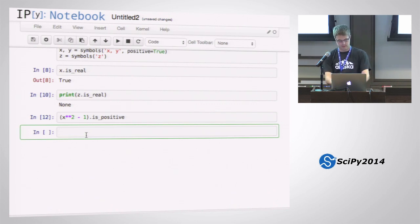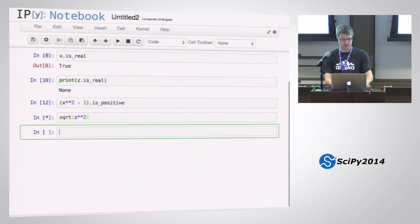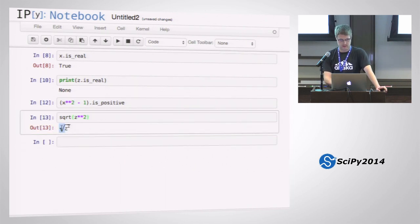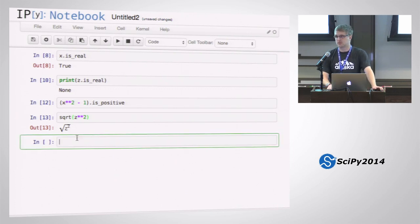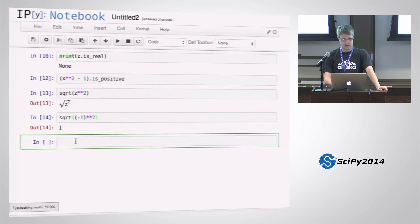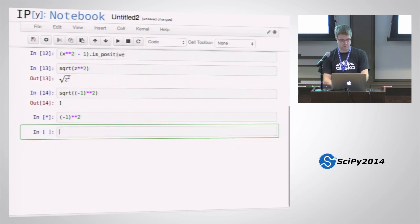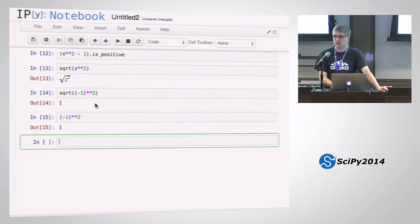And so this is useful because, for example, if you take like the square root of something squared, this doesn't simplify to just z. And the reason is that, in general, the square root of x squared does not equal x. For example, if x equals negative 1, so if I take negative 1 squared and I take the square root of that, this is just 1. That's because the negative 1 squared is 1, and the square root of 1 is 1.